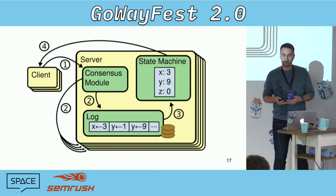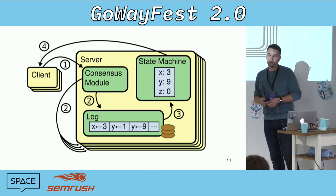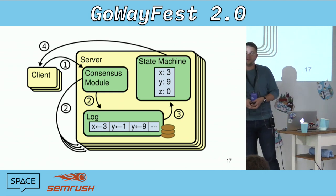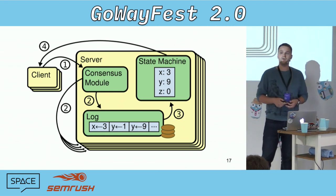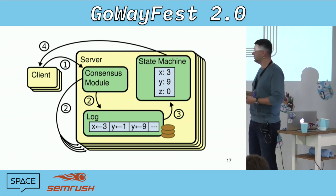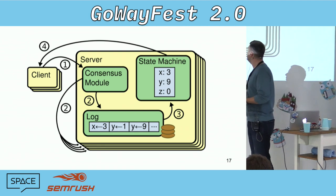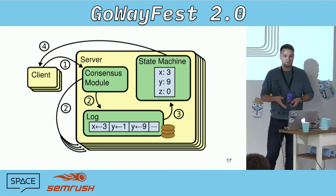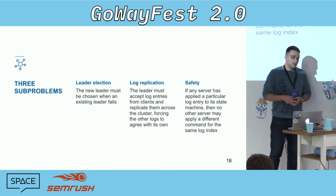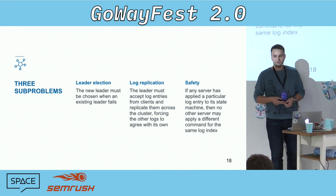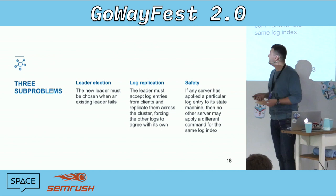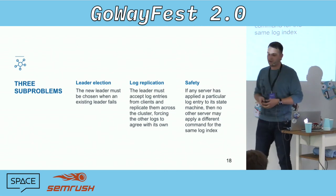Raft uses the replicated state machine. The replicated state machine in Raft is a consensus module with a state machine and a log. The consensus module is used to communicate with clients — it receives commands from clients, writes them to the log, and the state machine executes commands from the log in order. Raft divides the consensus problem into three sub-problems: leader election, log replication, and safety.